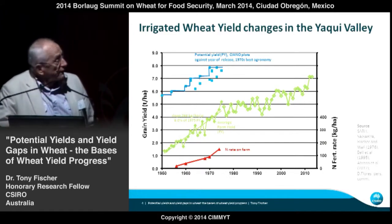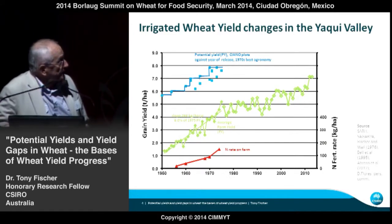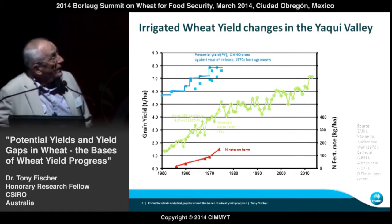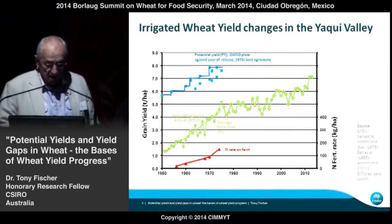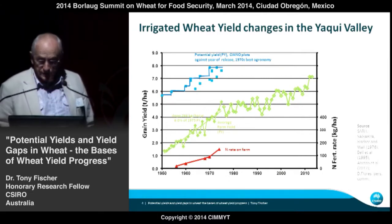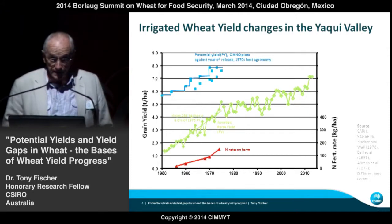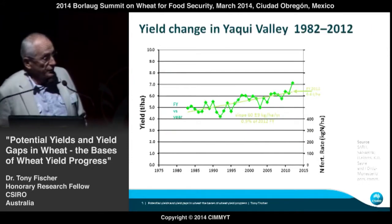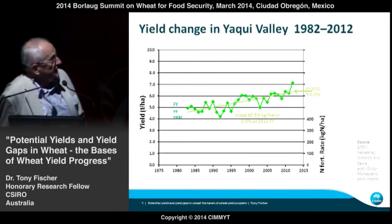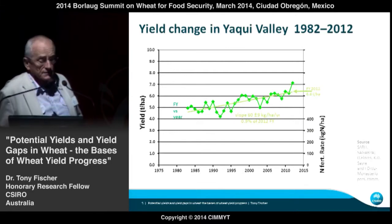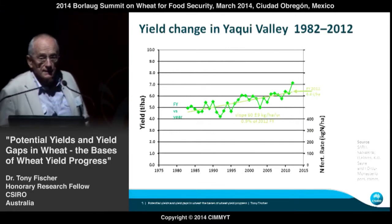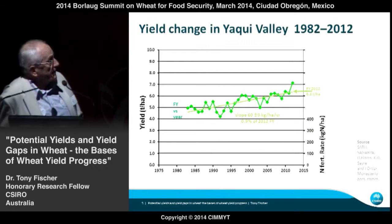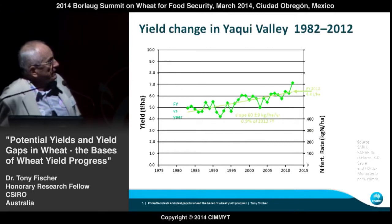Of course we're all interested in the following 40 years in the Yaqui Valley. It's gone from one ton to almost seven tons. Looking at the last 30 years more closely — because farm yield is quite variable from year to year — we get a good handle on slope. It looks like we're doing about 0.9% per annum now in farm yield in the valley, that's 180,000 hectares of irrigated wheat every year.